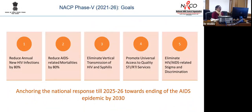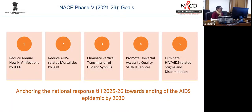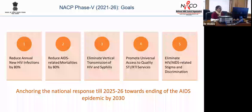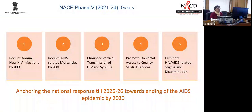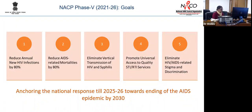Phase 4 and 5 lays a lot of emphasis on reducing annual new HIV infections, reducing AIDS-related mortalities, eliminating vertical transmission of both HIV and syphilis, promoting universal access to quality STI and RTI services, and eliminating HIV AIDS-related stigma and discrimination. These are aligned towards the goals of ending the AIDS epidemic as a public health threat by 2030.